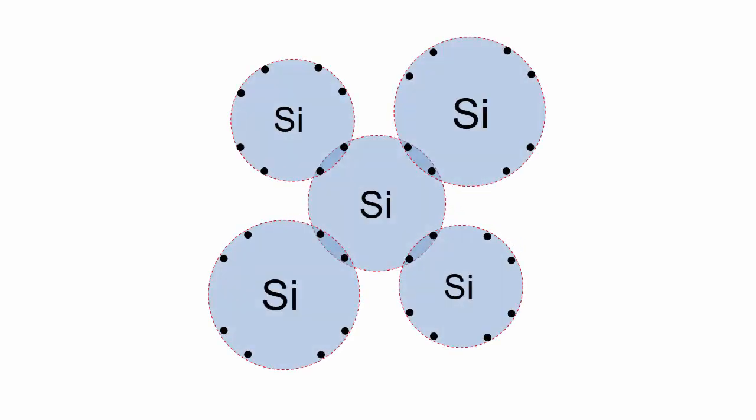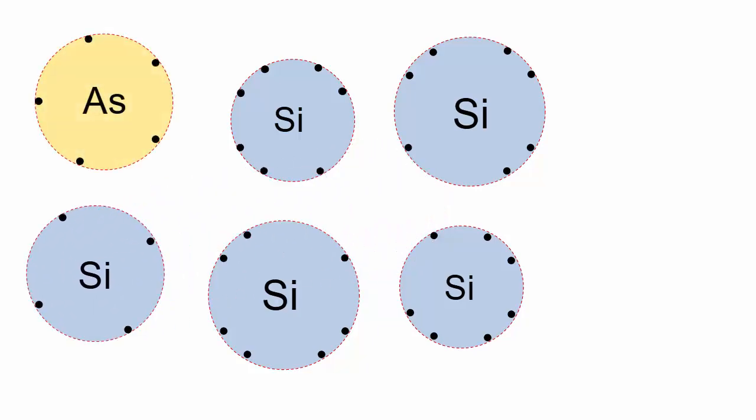Now let's look at what happens when a different type of atom replaces a silicon atom. Arsenic has not four, but five electrons in its outer shell. When put in a silicon crystal, the atom readily releases a mobile electron and acquires a positive charge.